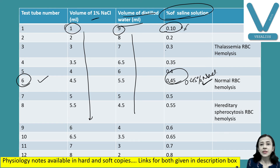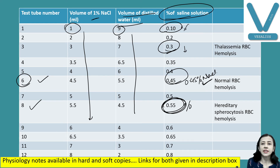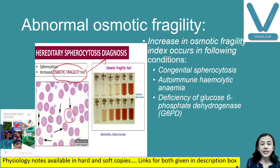If a person has thalassemia, red cell fragility decreases, so hemolysis starts at 0.3% NaCl. When a person has hereditary spherocytosis, osmotic fragility is increased — hemolysis begins at 0.55% NaCl. So we find hemolysis earlier in hereditary spherocytosis and later in thalassemia. This test is used to diagnose thalassemia, hereditary spherocytosis, and other conditions with abnormal osmotic fragility. We add a blood drop to each test tube with different percentages of NaCl and measure at which percentage hemolysis occurs.